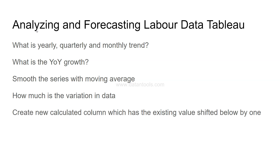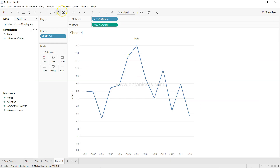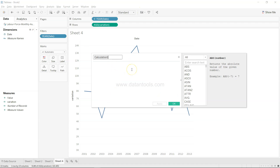Coming back, the next step is to create a new calculated column that has the existing value shifted by one — which can be an interview question. In time series forecasting, you move values one level down for creating a naive model. The naive model says that the previous value is the best reflector of the next value — the previous value will repeat itself for the next month. So January's value comes into February's row, and that becomes our forecast for the next month.